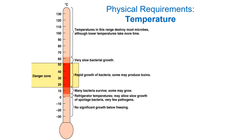Every reaction in a cell is catalyzed by an enzyme, and enzymes are proteins that denature at high heat. So there's a range where the reactions of life can occur quickly. If temperatures are below that, molecules move too slowly; above that range, enzymes denature and stop working. The 'danger zone' is the region in which most bacteria do quite well.